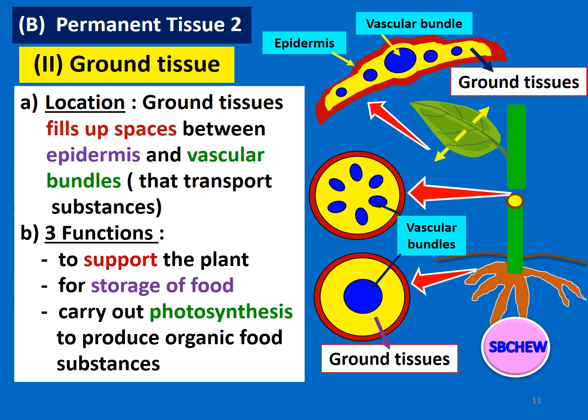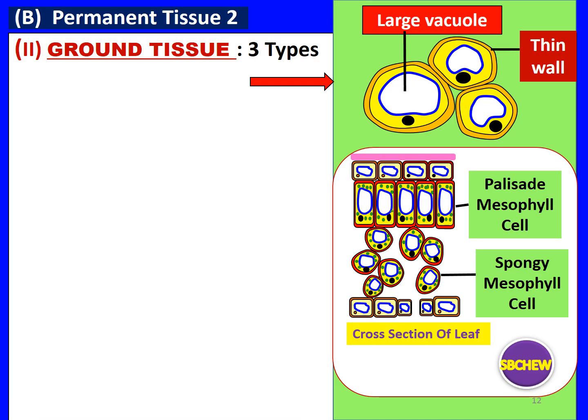The three functions of the ground tissue are: number one, to support the plant; number two, for storage of food; and number three, to carry out photosynthesis to produce organic food substances. There are three types of ground tissue: number one, parenchyma tissue; number two, collenchyma tissue; number three, sclerenchyma tissue. Remember that all of these tissues end with the word "chyma."